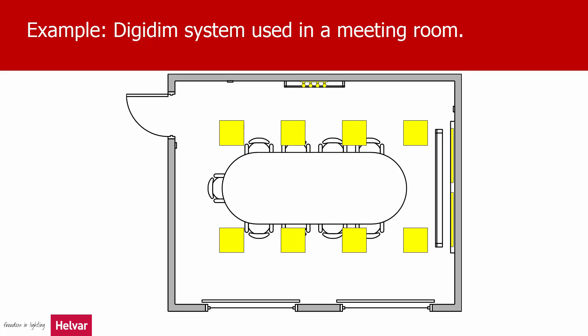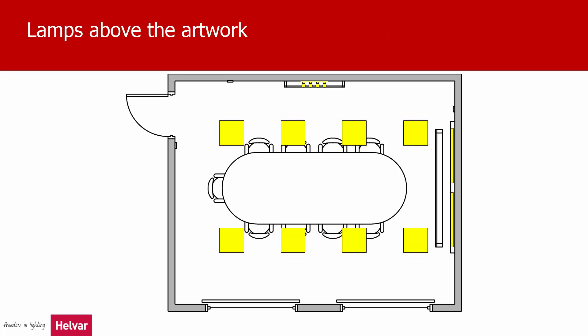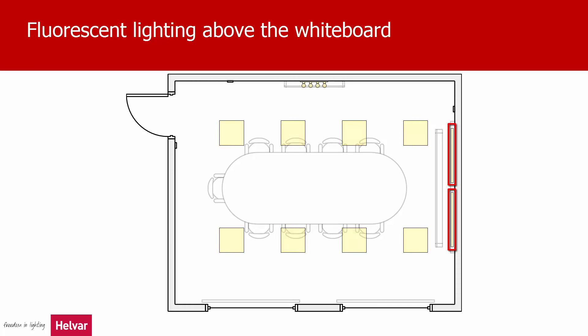In terms of electric lighting, there are three main things you might like to control in this room. The first is the main ceiling lighting — LED luminaires. The second set of lights are the lamps above the artwork. And there are the two fluorescent luminaires, or light fittings, above the whiteboard on the wall behind the projector screen.